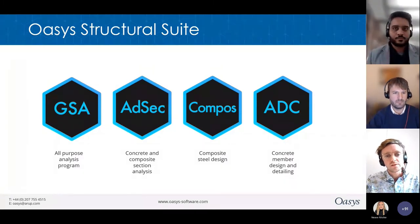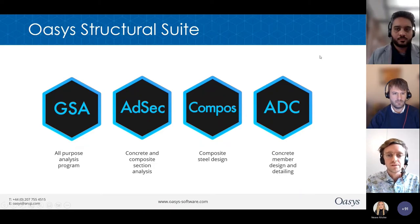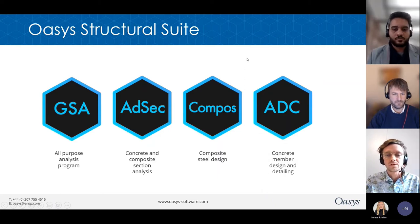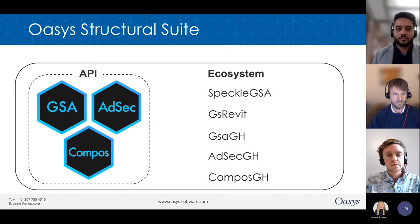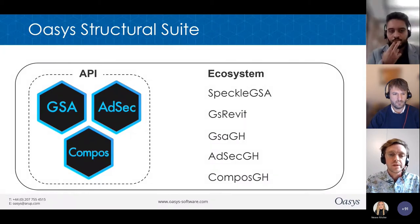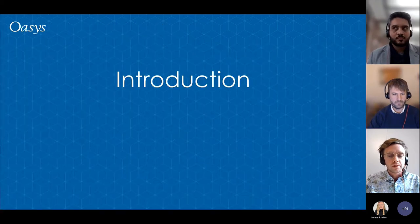In our structural suite we have GSA, which is the main software for Finite Element Analysis, and then we have Section Design for AdSec — that's Concrete and Composite Section Analysis — Composs, which is Composite Steel Design, and ADC, which is Concrete Member Design. Our little team works around the core products using the API, making it easier to use them through Grasshopper. We are also working with Revit and Speckle. I'll now hand over to my colleague Eddie.